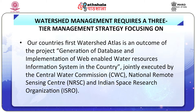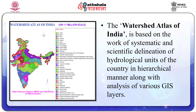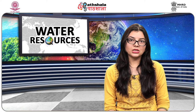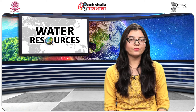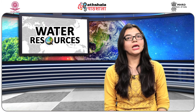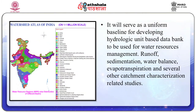Indian Space Research Organisation (ISRO). The watershed atlas of India is based on systematic and scientific delineation of hydrological units of the country in a hierarchical manner, along with analysis of various GIS layers at a 1:50,000 scale. It will be an important digital database for planning and monitoring of development programs implemented on a watershed basis, serving as a uniform baseline for developing hydrologic unit-based data banks for water resources management, runoff sedimentation, water balance, evapotranspiration and several other catchment characterization related studies.